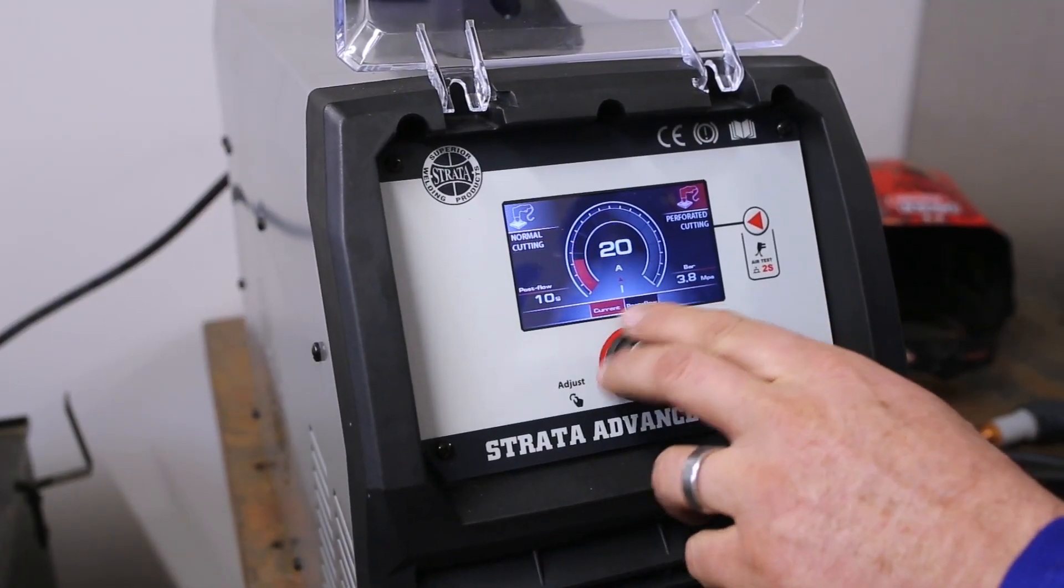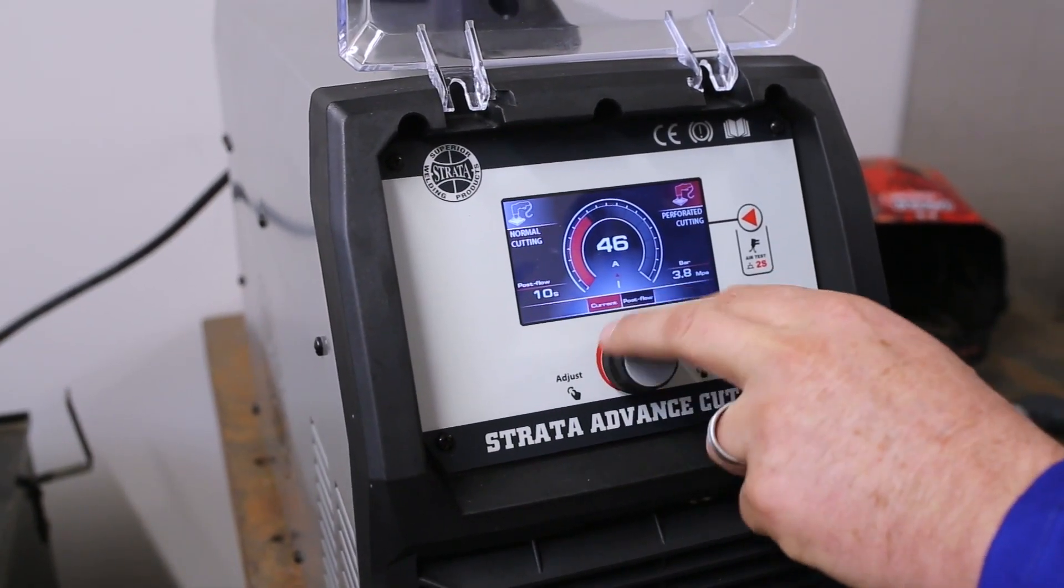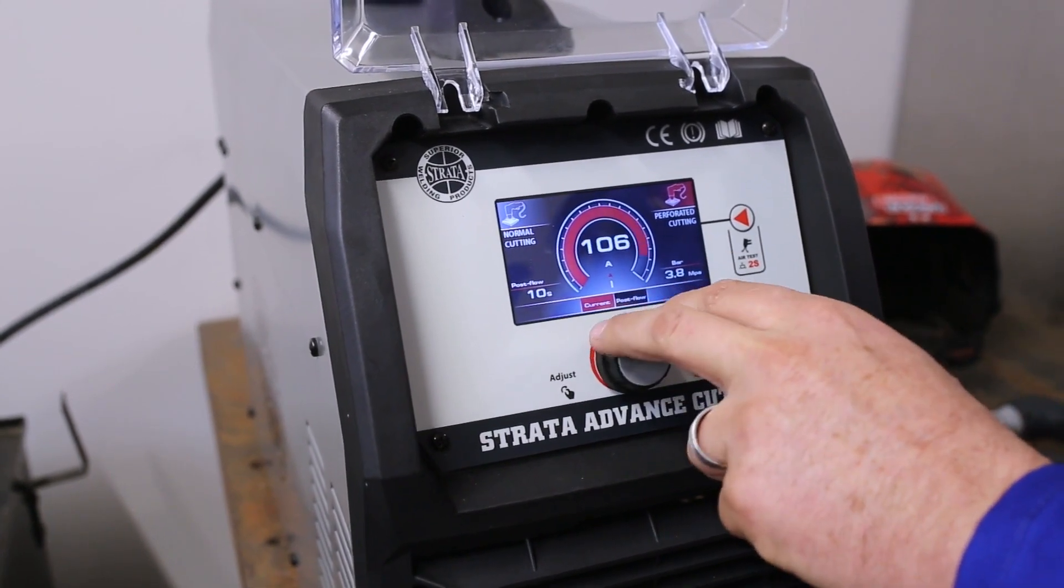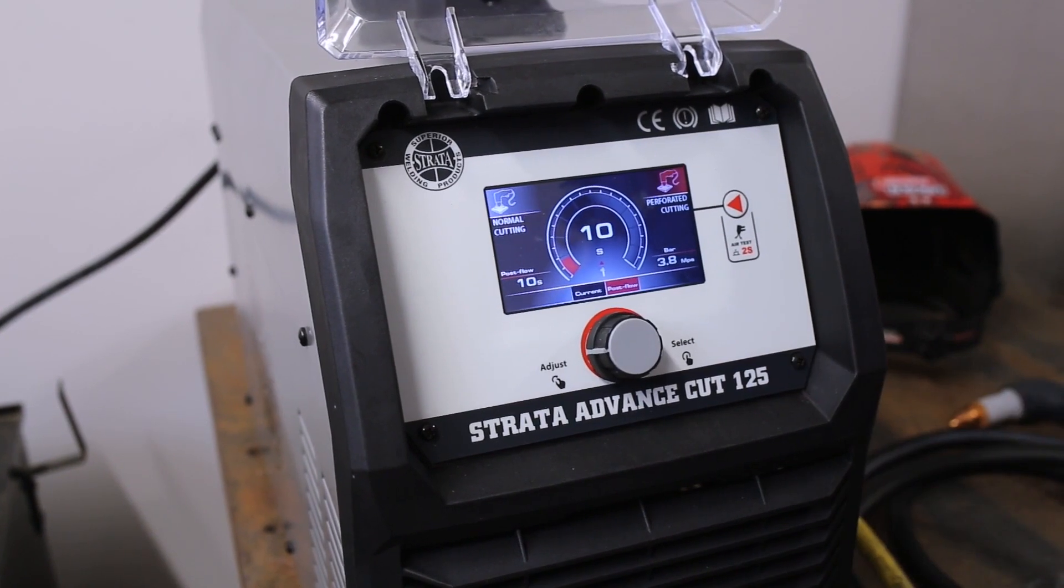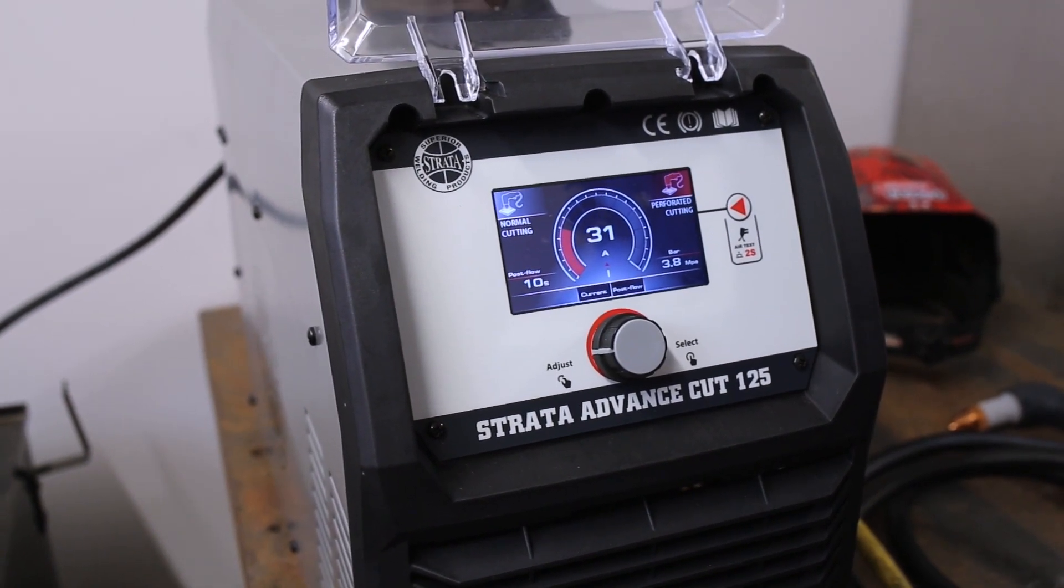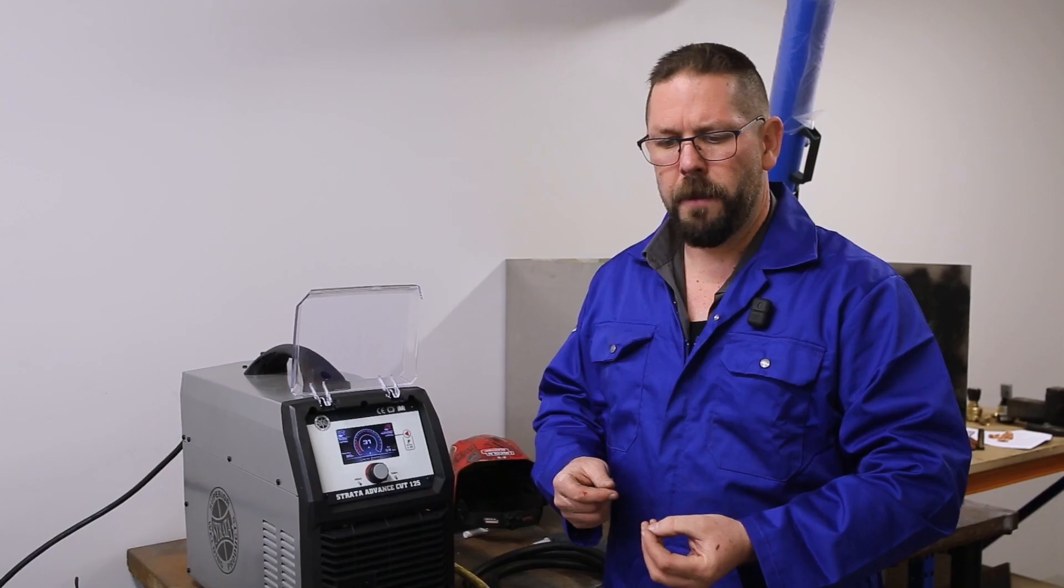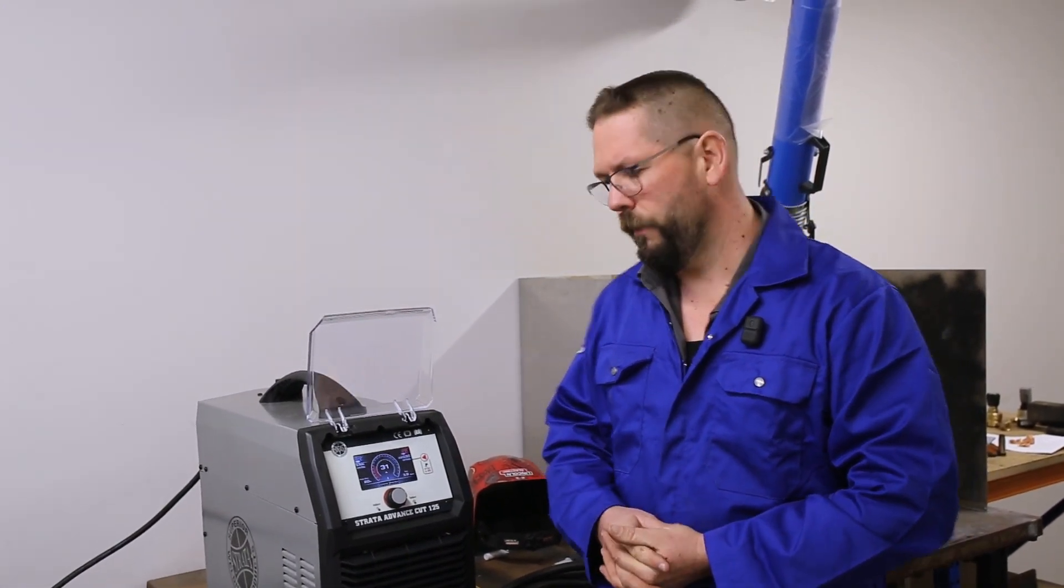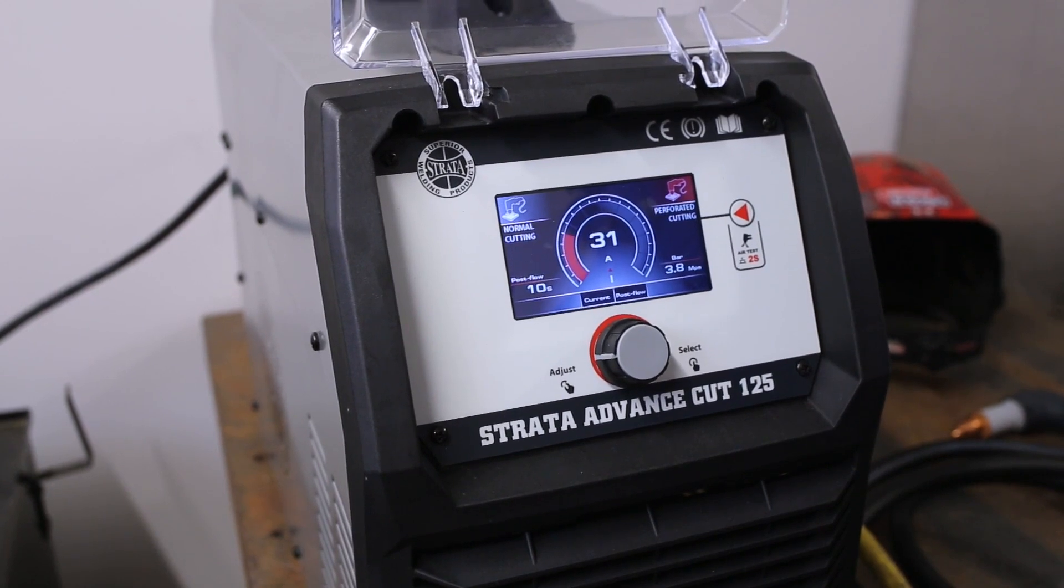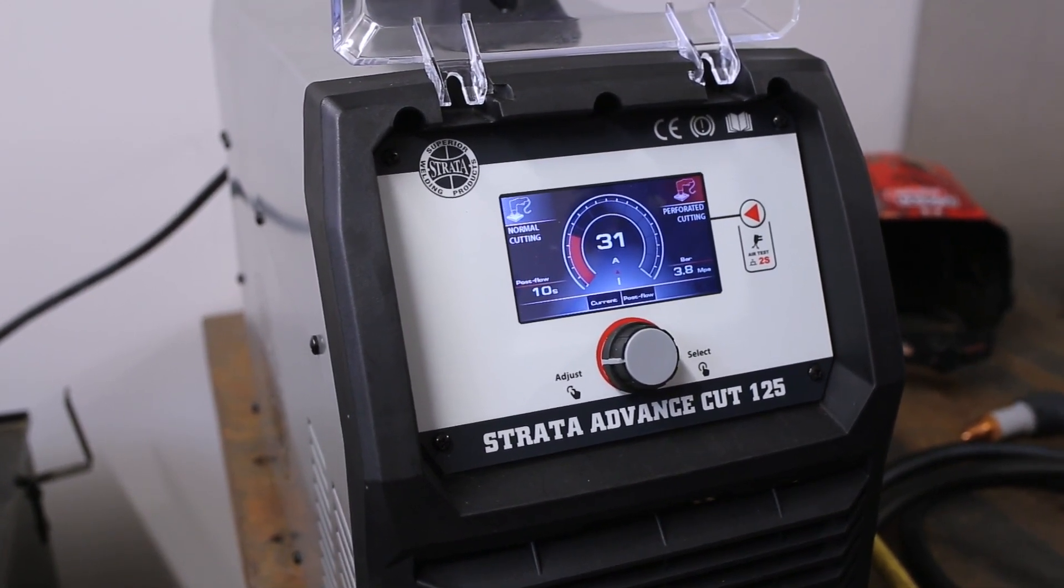Current, obviously that's how much amps we've got, that's how much heat we've got coming out the tip. Post flow, that's going to select how long the air keeps running after you've let the trigger go. The advantage of having a lot of post flow is cooling down the tips and it's not letting any damage or any overheat happen in that head. You can be five meters away, you can tell how many amps you're doing and it's really easy to adjust.